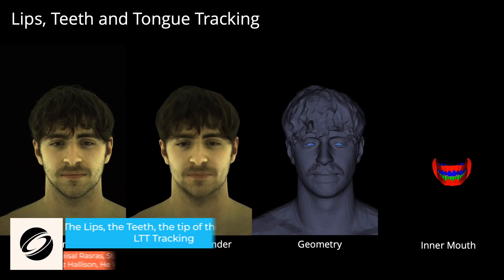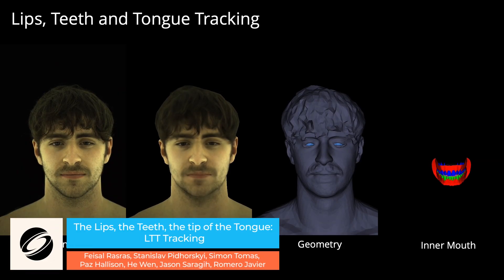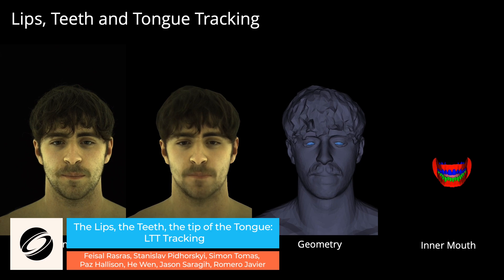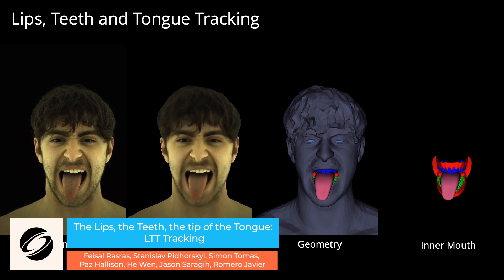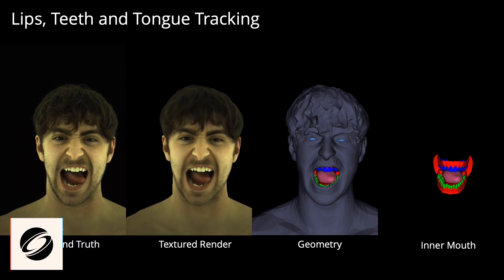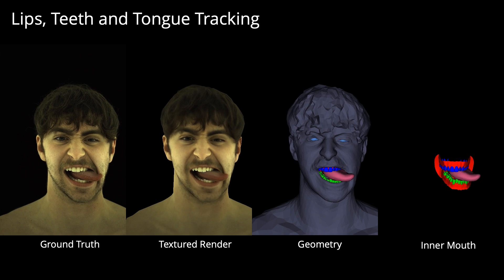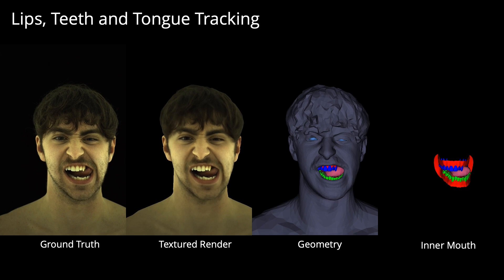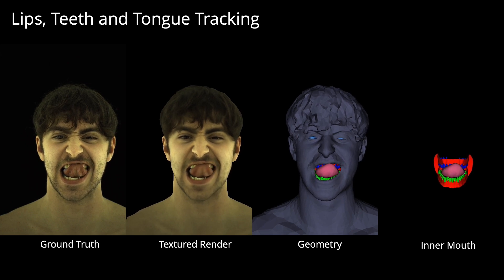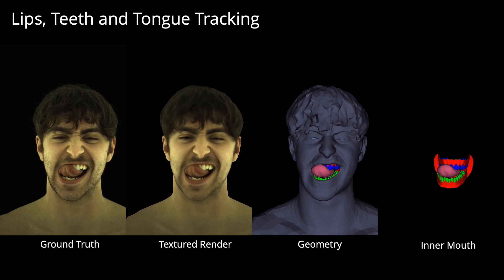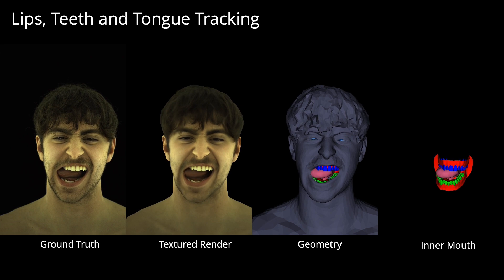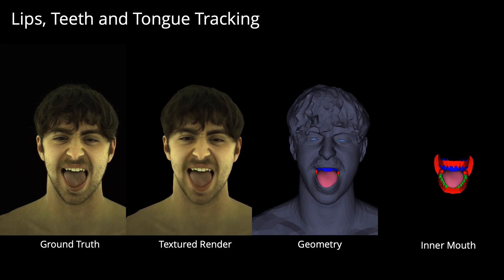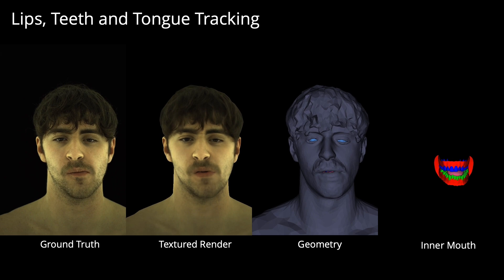A person-specific, detailed model of the inner mouth system is shown here. The method combines data from dental mouth scans and facial performances captured by a multi-camera rig. A novel inverse rendering formulation is used to produce accurate registration of tongue, teeth, and jaw, as well as the segmentation of the motion of rigid and non-rigid elements such as the tongue — the most realistic and accurate such model to date.